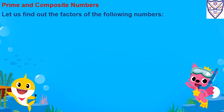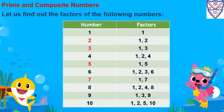Let us find out the factors of the following numbers. For 1, the only factor is 1. For 2, 1×2=2 and 2×1=2, so 1 and 2 are the factors of 2. For 3, 1×3=3 and 3×1=3, so 1 and 3 are the factors of 3.